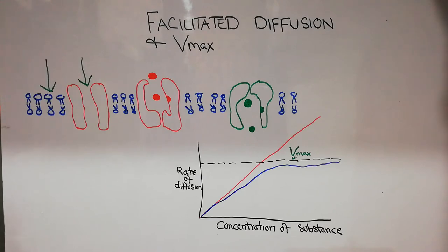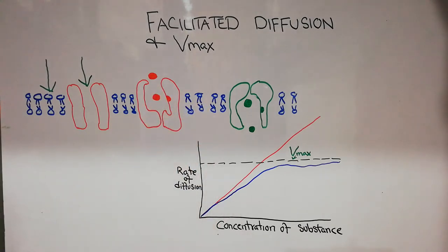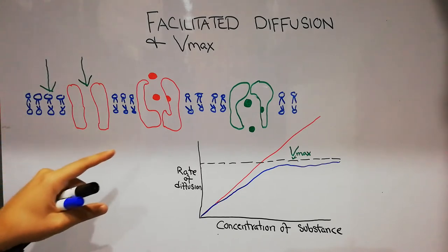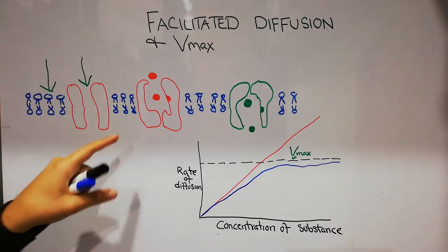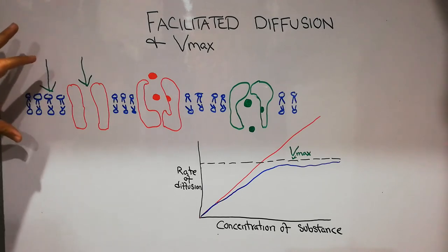Another type of passive transport is facilitated diffusion. Facilitated diffusion is also passive transport — it does not require any energy — but it occurs through a special type of protein which facilitates transport and has certain limits. The limit of transport is known as the maximum rate of diffusion, or VMAX.